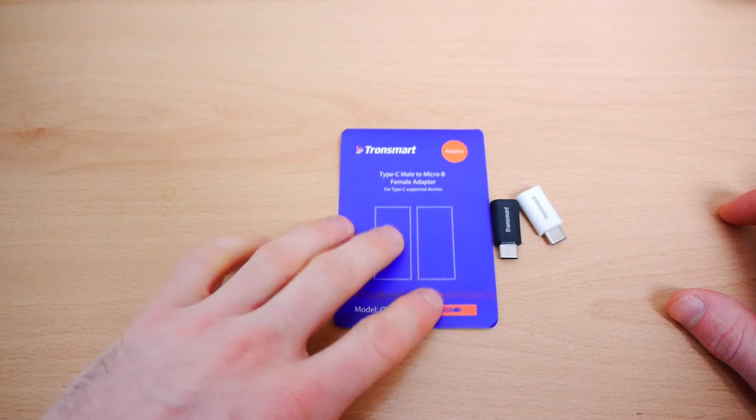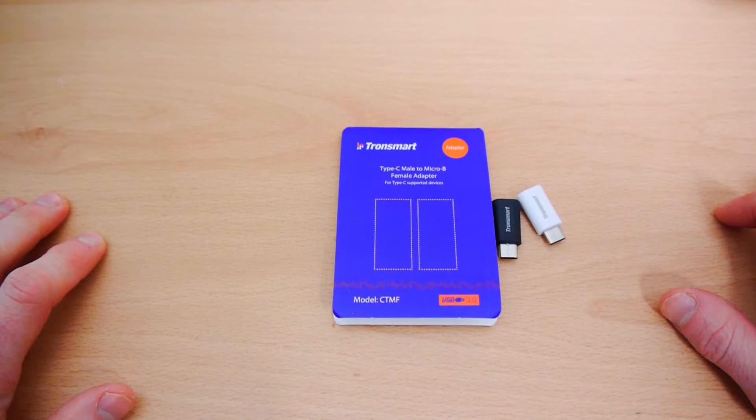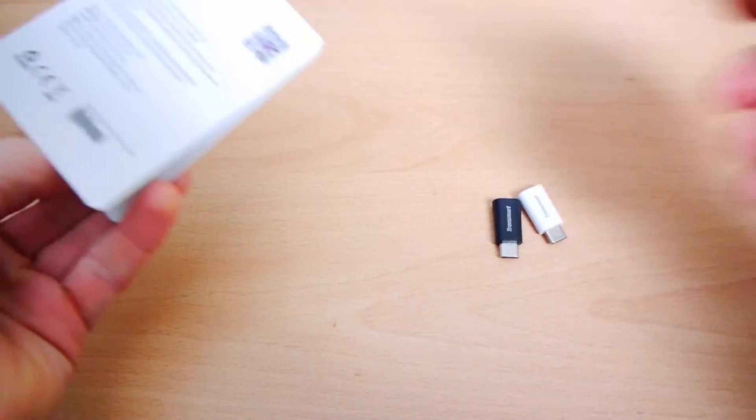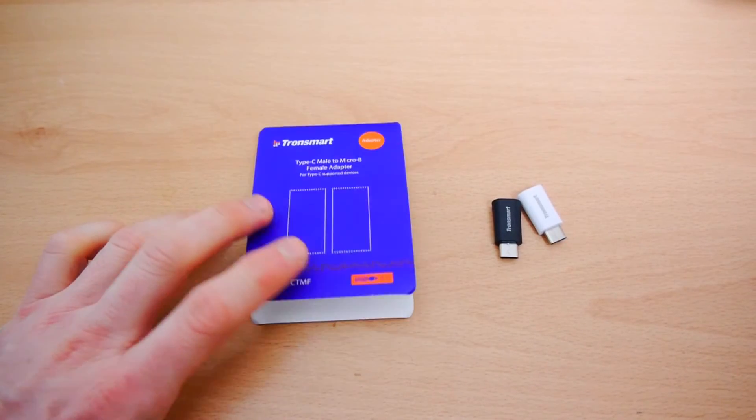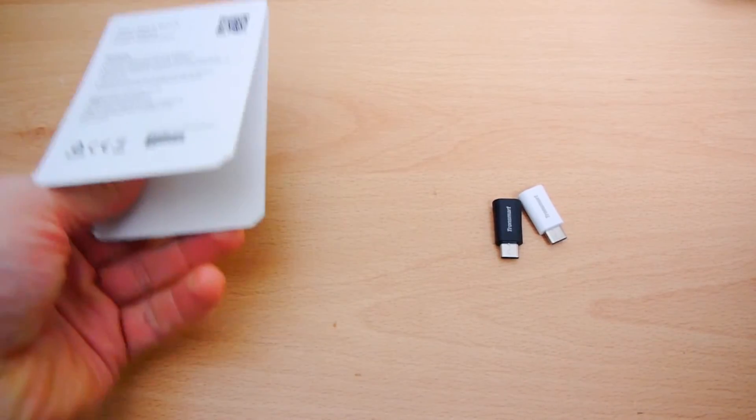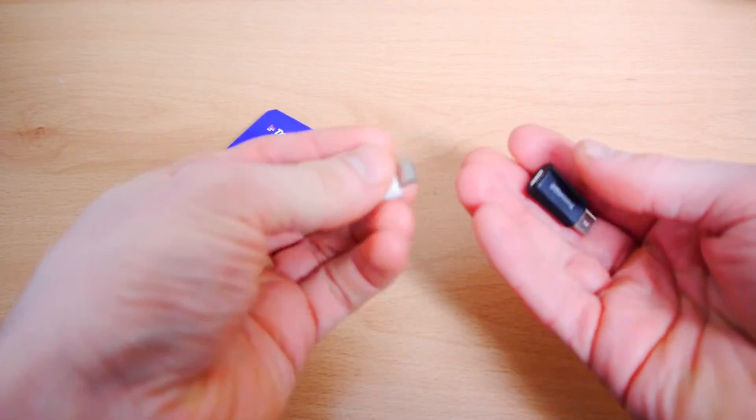So there it was. The TronSmart Type-C male-to-micro-B female adapter for Type-C supported devices. I picked this up on Amazon for £4.99. It's very cheap.